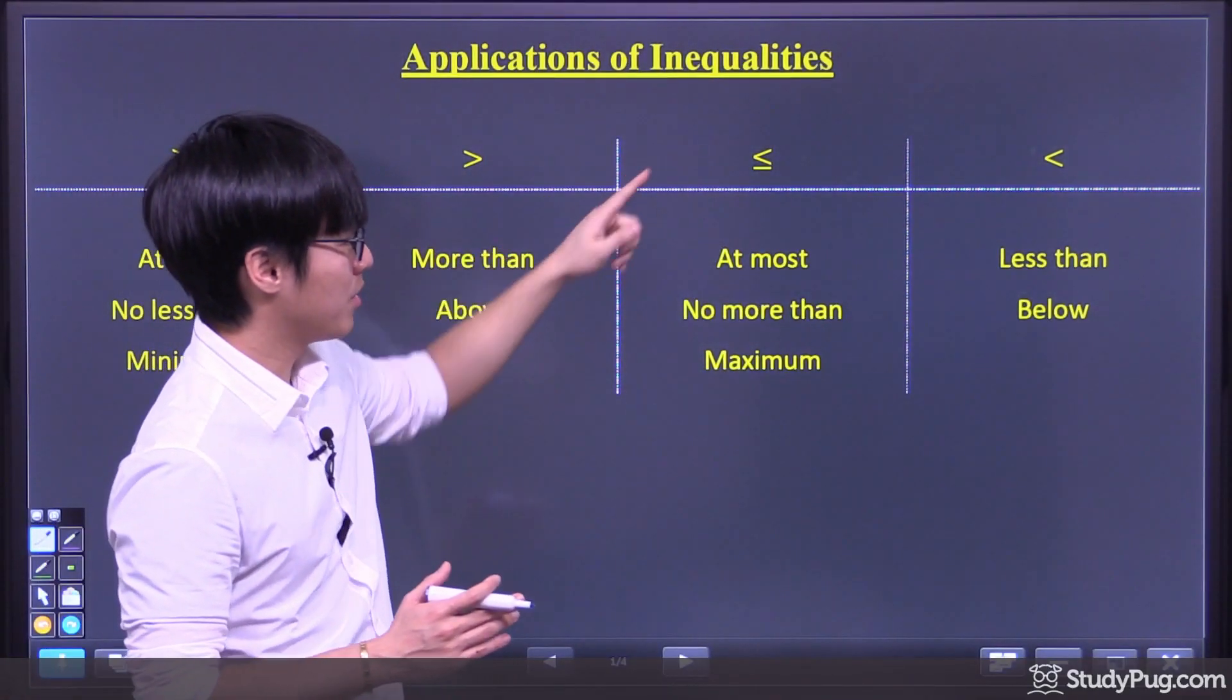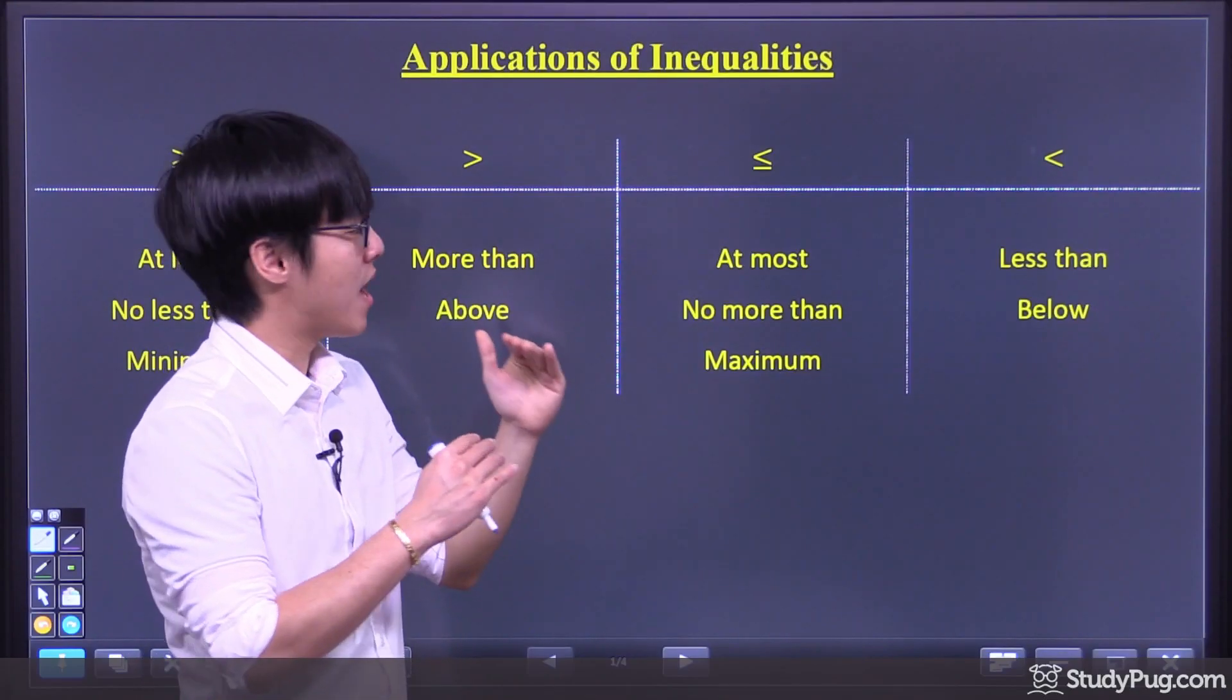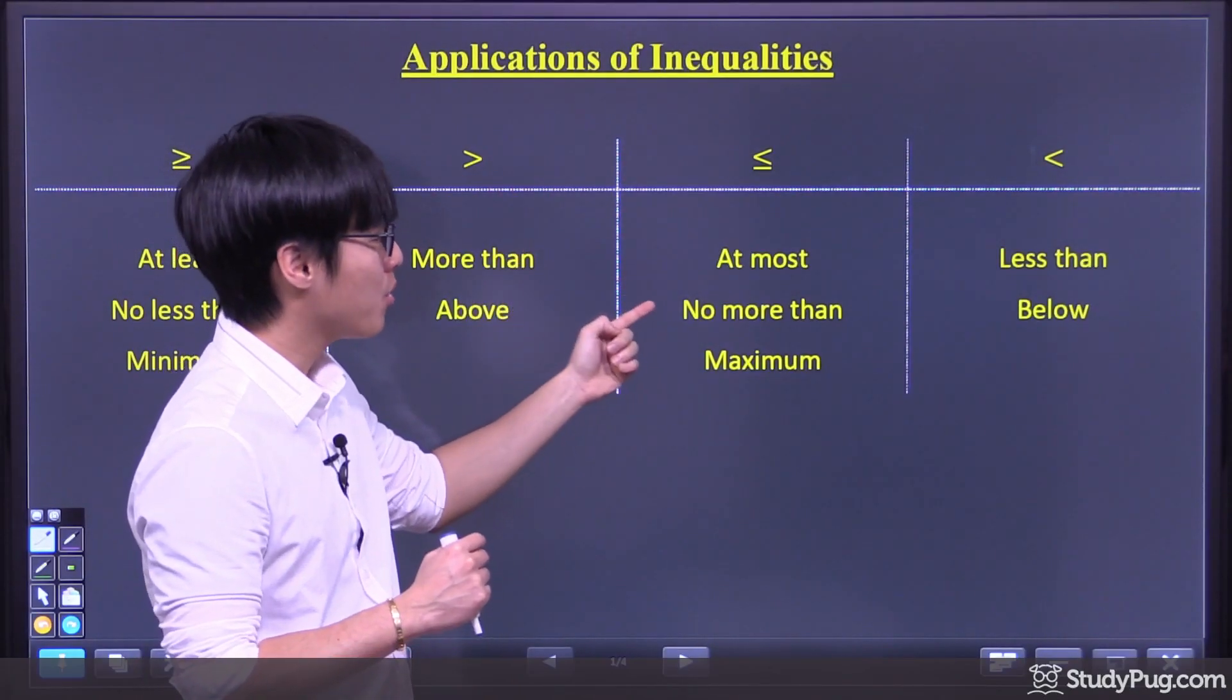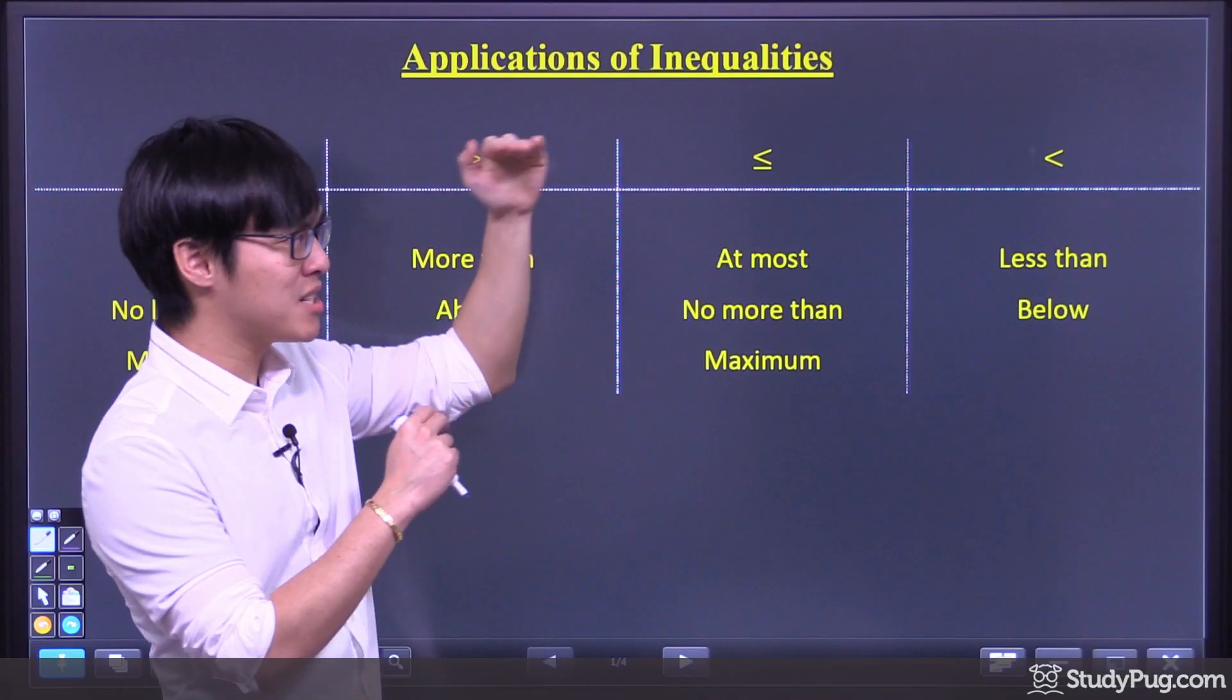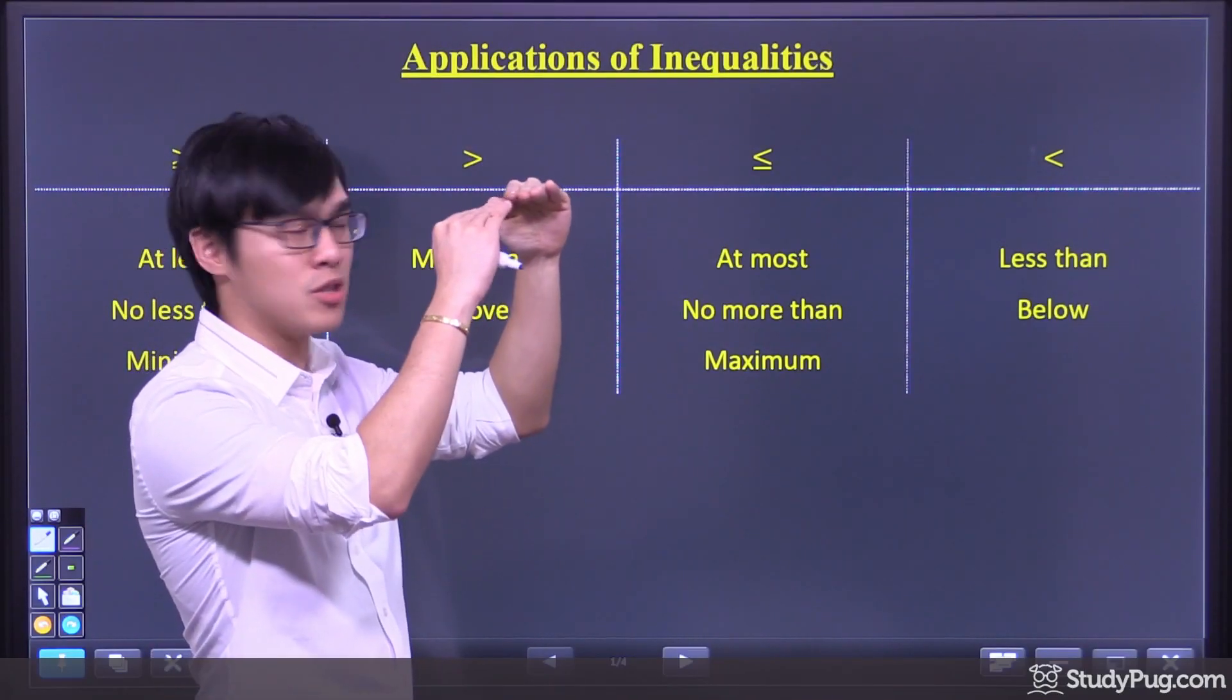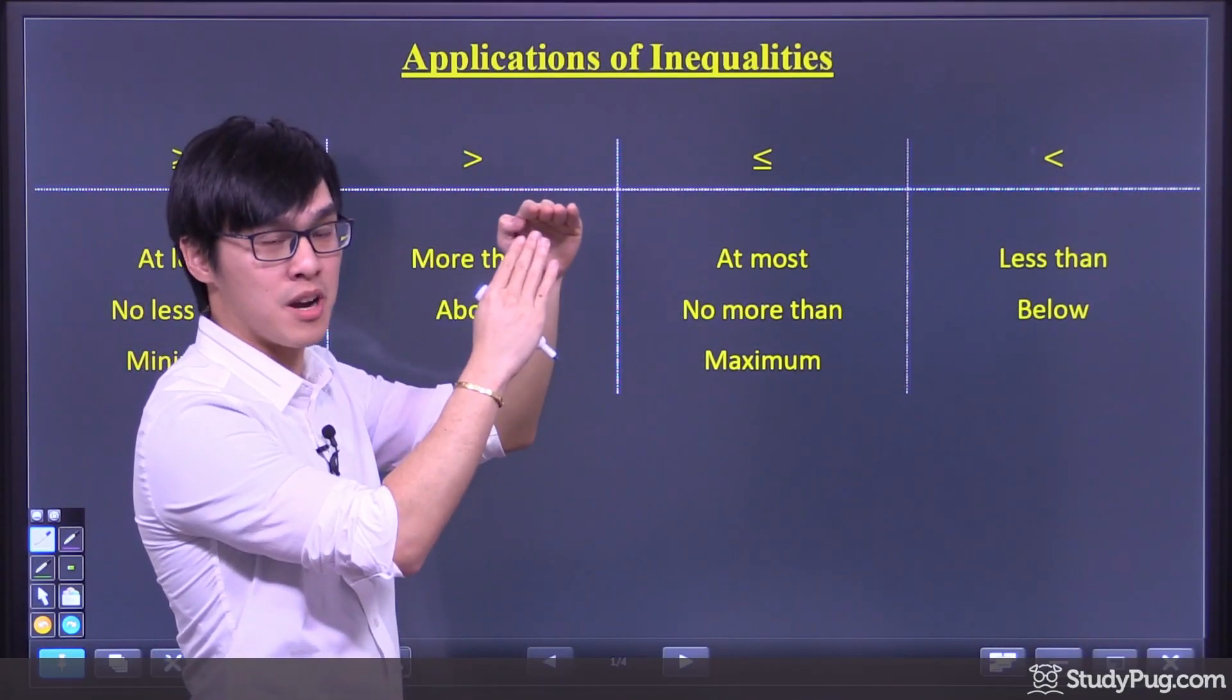For less than or equal to, they would like to say at most. So you have at most, no more than, or maximum. We have a maximum of this amount, so it has to be less than or equal to, right?